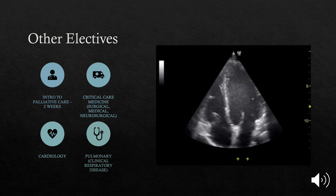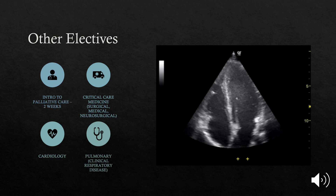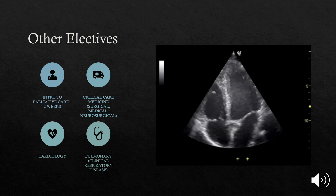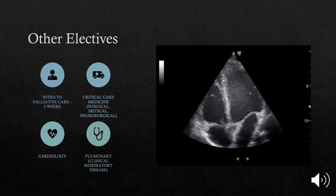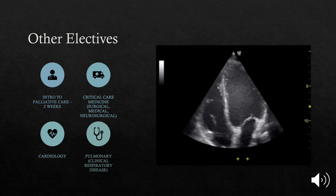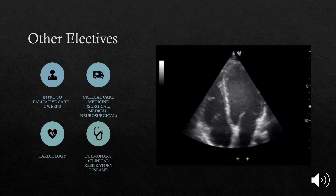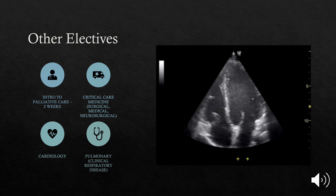For other electives if you're going into anesthesia, palliative care is a good one — you'll get exposed to patients dealing with chronic pain. For critical care medicine there are lots of ICU rotations: surgical ICU, neuro ICU, medical ICU, which would be good sub-I options. I did the cardiology consult service as well as the cardiology sub-I and got a lot of exposure to echocardiograms, which is great for someone going into anesthesia. The clinical respiratory disease elective in pulmonary is another great option.